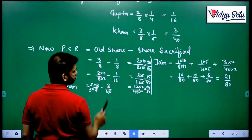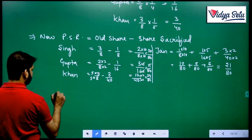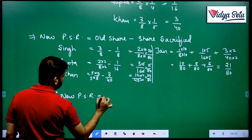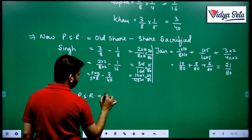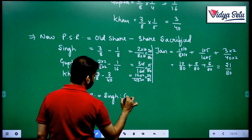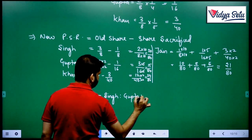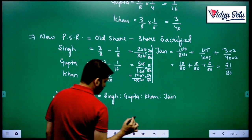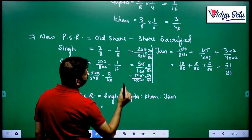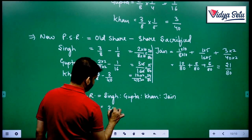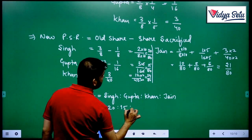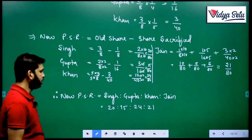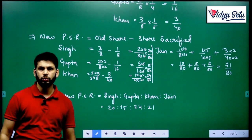So the new profit sharing ratio for Singh is to Gupta is to Khan is to Jain equals 20 is to 15 is to 24 is to 21. This is our new profit sharing ratio.